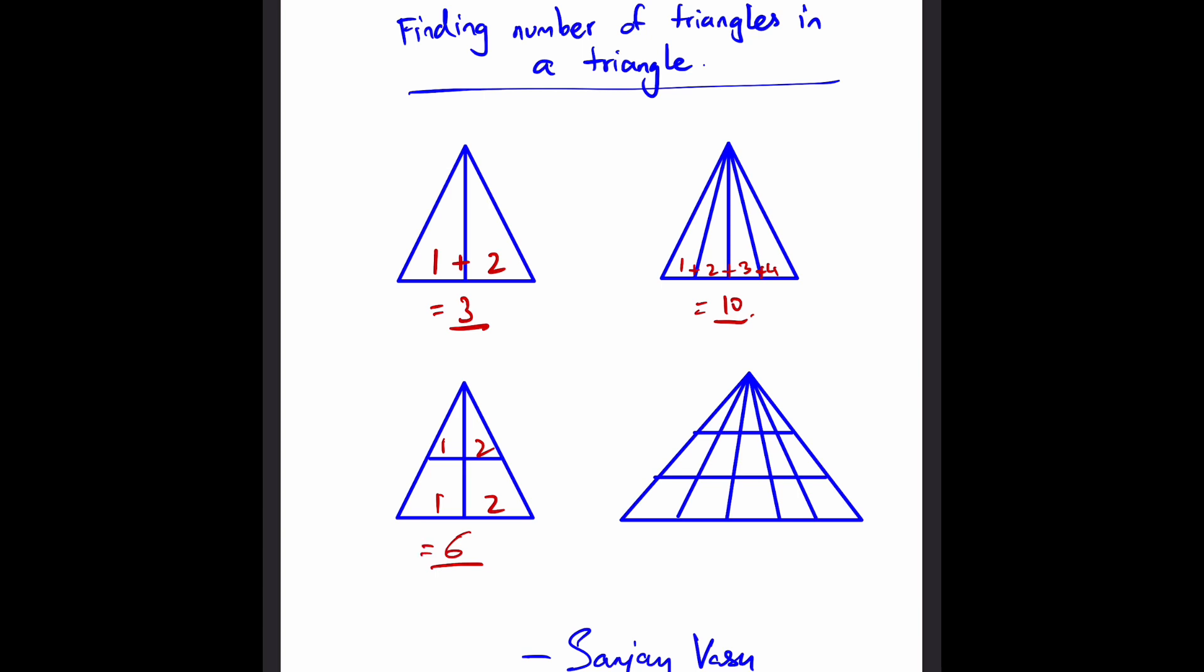But actually, when you count it, it'll be one, two, and then we have the two large ones, three and four, and then the total triangle which is five, and then this one here which is six. So there are actually only six triangles and this trick is correct.